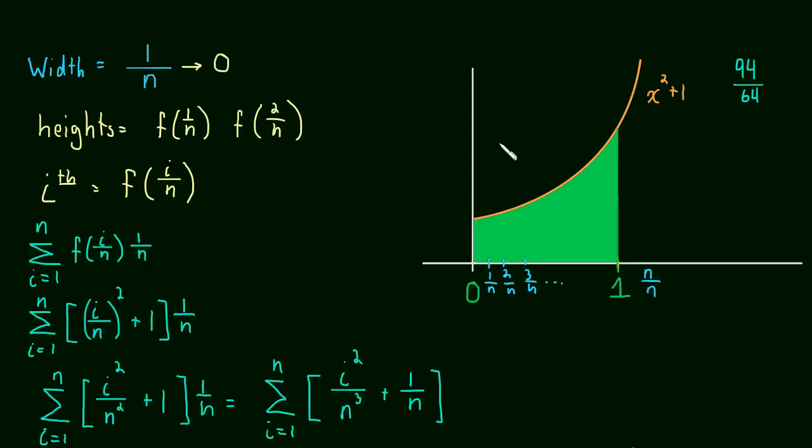So we're making the width of each rectangle infinitely small. And then we're summing up an infinite amount of those rectangles. And somehow that comes out to be this exact area here, 4 thirds.